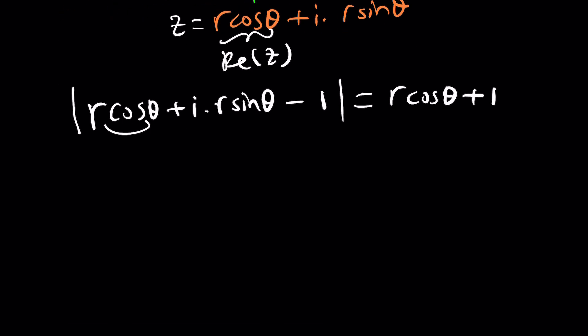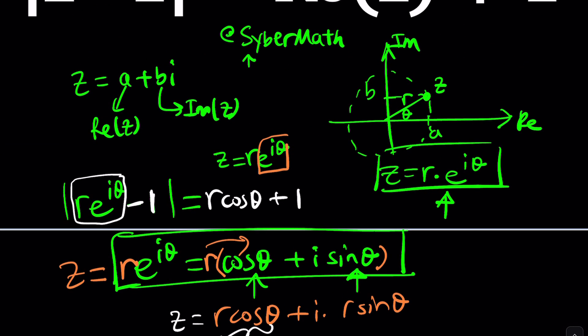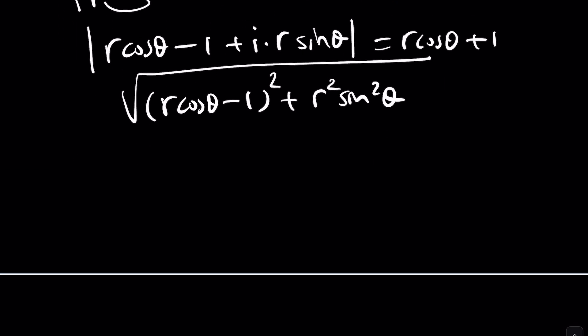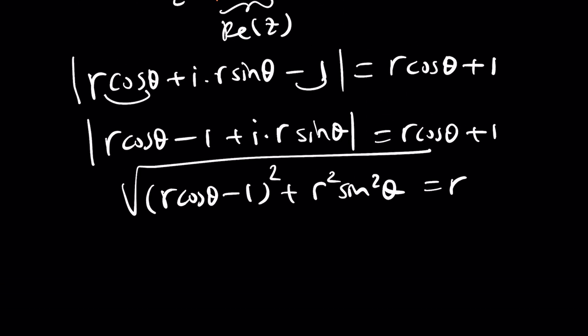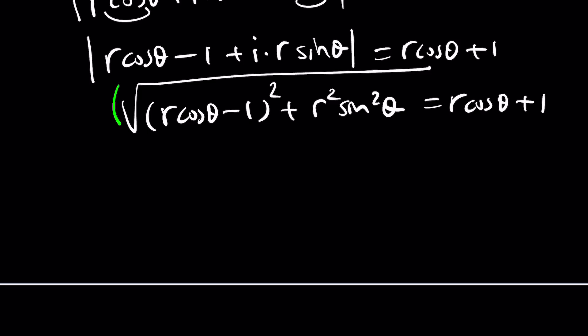You kind of have to expand it. Wait a minute, can we not just use the same thing we used? Sure, you can just write it as r cosine theta plus i times r sine theta. And then minus one, take the absolute value, set it equal to r cosine theta plus one. And then this minus that, that's going to make the real part. And if you remember how to find the absolute value of a complex number, you take the real part, square it, and then you square the imaginary part, you add them together, and then take the square root. This is formula from Pythagorean theorem. A squared plus b squared equals r squared.